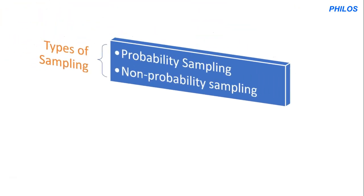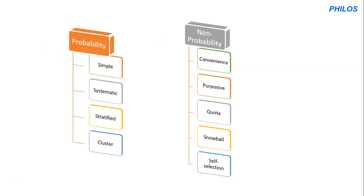There are two types of sampling. The first is probability sampling, also referred to as random sampling. The second is non-probability sampling, also referred to as non-random sampling. In probability sampling, every element in the population has a known, non-zero probability of being selected. In non-probability sampling, elements are selected on the basis of the judgment or convenience of the researcher. For probability sampling we have simple random, systematic, stratified, and cluster. For non-probability we have convenience, purposive, quota, snowball, and self-selection.